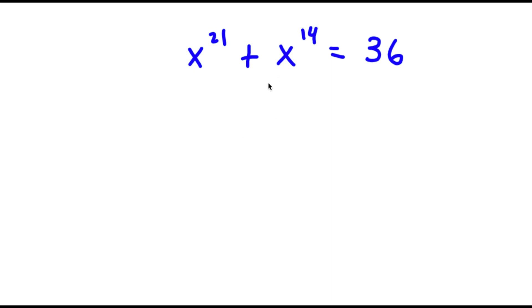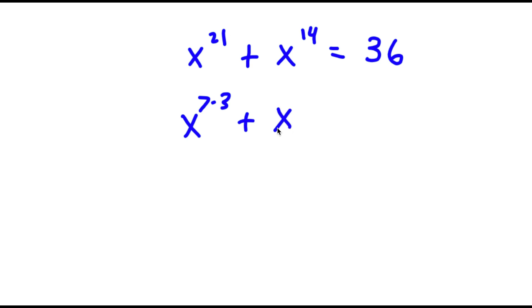In this problem, I have x to the power of 21 plus x to the power of 14 is equal to 36. I'm first going to rewrite this as x to the power of 7 times 3 plus x to the power of 7 times 2 is equal to 36.